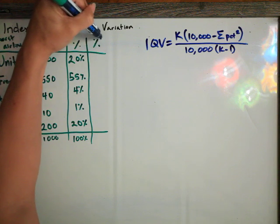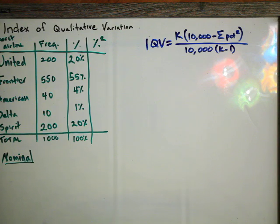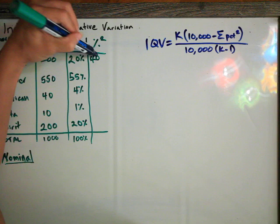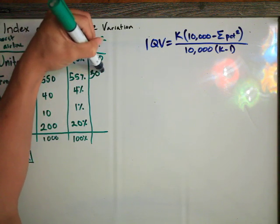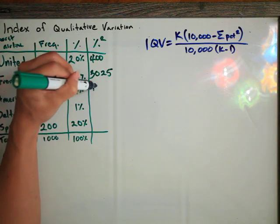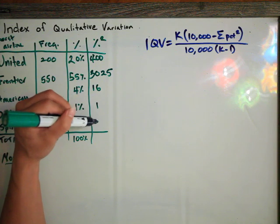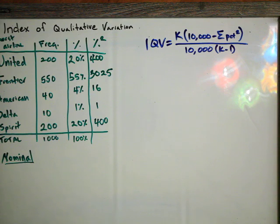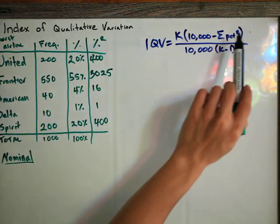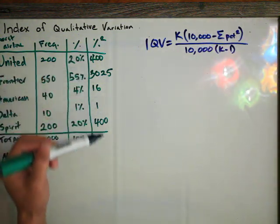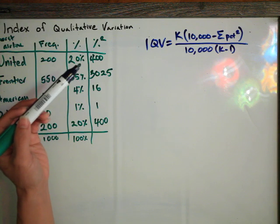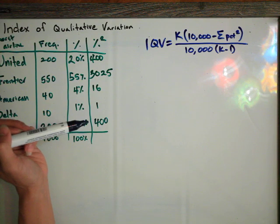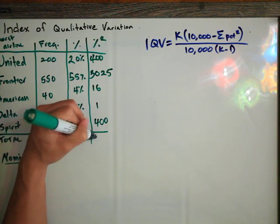In the next column, we're just going to square all of these. So 20 squared is 400. 55 times 55 is 3,025. 4 times 4 is 16. 1 times 1 is 1. And 20 times 20 is 400. Each of these is one category's percent squared. In order to get the sum of percent squared, we have to add all of those up: 3,025 plus 400 plus 16 plus 1 plus 400.